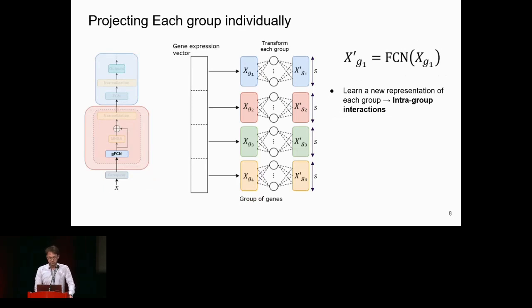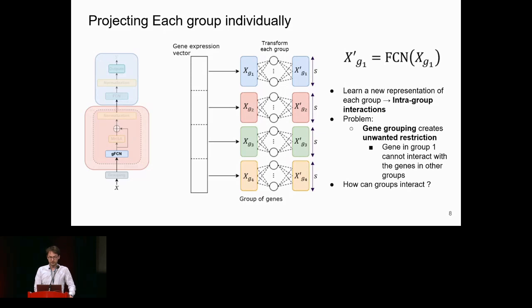Once you have your groups, they are projected into a space using a fully connected network to learn a new representation, considering intra-group interactions. For instance, the representation of group one considers all possible interactions from features within group one. However, this creates an unwanted restriction, as features from group one cannot interact with other groups, and there might be important interactions between groups.